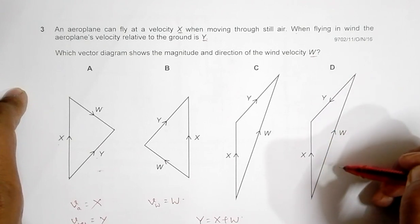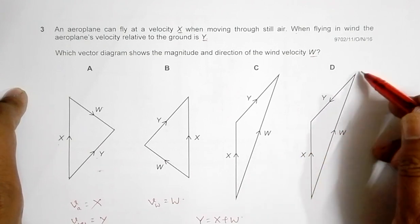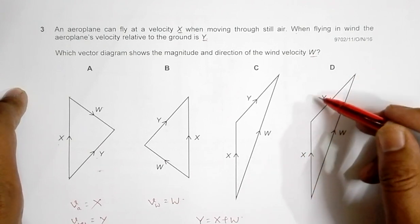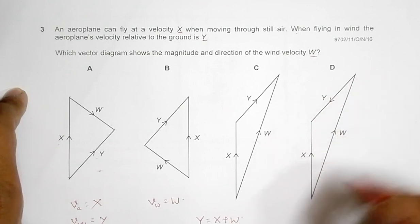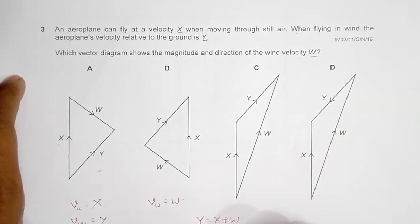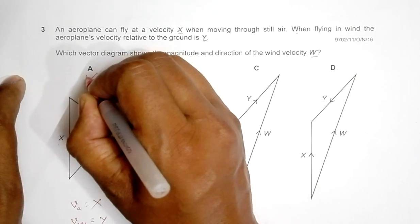In choice D, it seems as if x equals w plus y, which is also not the case. So choice A is the only choice which is possible as an answer.